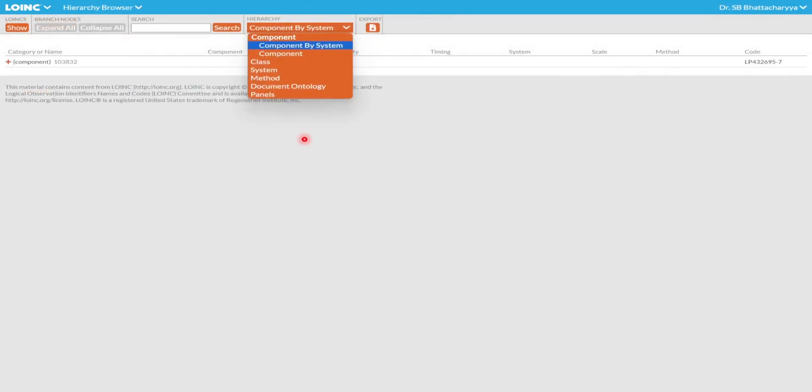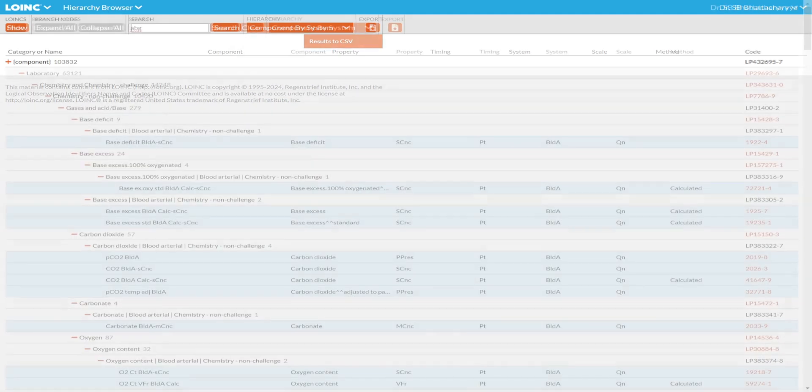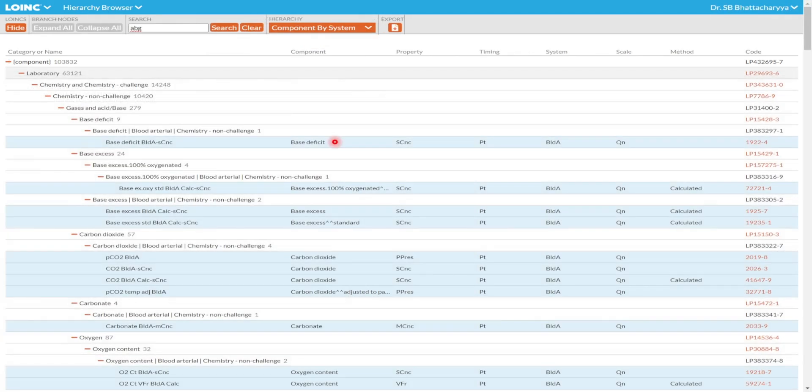Next we have the LOINC hierarchy browser. This tool helps users navigate the detailed hierarchy of LOINC codes. It is especially useful for detailed searches, allowing drilling down into specific categories. Here is the screenshot of the hierarchy browser list of views. There are quite a few useful ones, so you can search by component by system or just by component, or else class, system, method, document ontology, panels. The results too, you can export to CSV file.